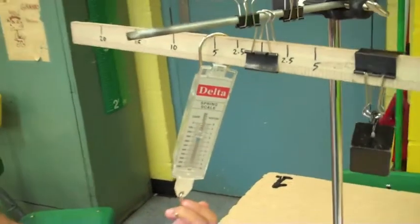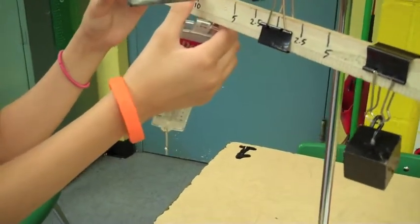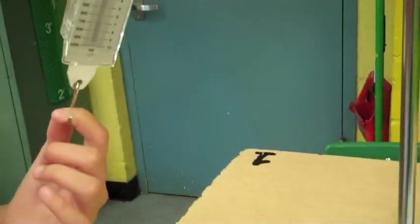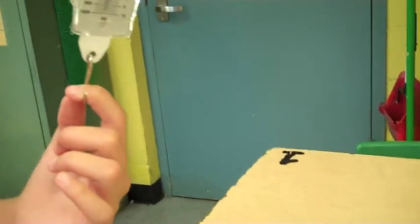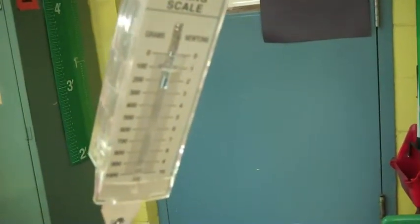And we're now going to move the spring scale to the 10 centimeter position. Once again, we're going to pull down with the effort. And the effort pulling down is at 100 centimeters.